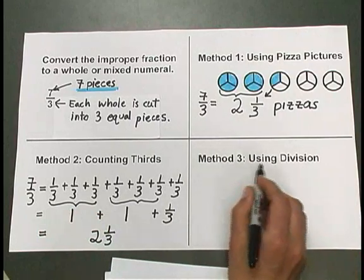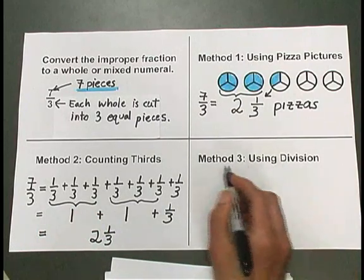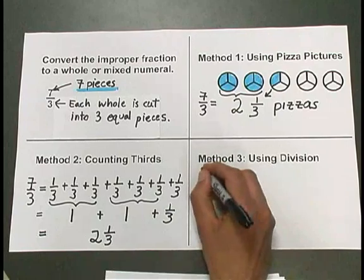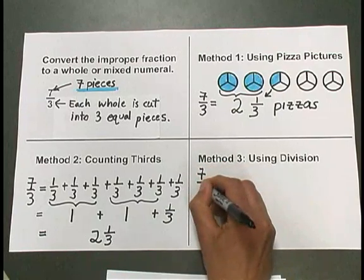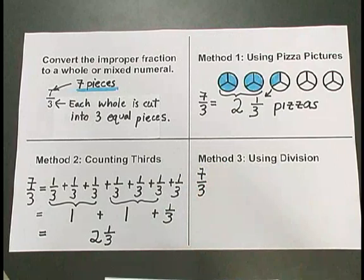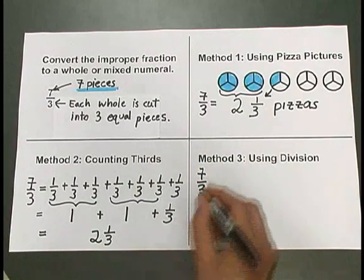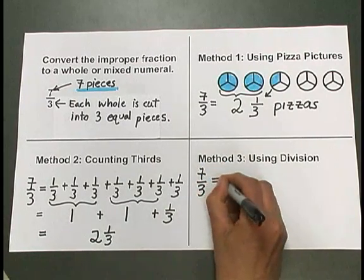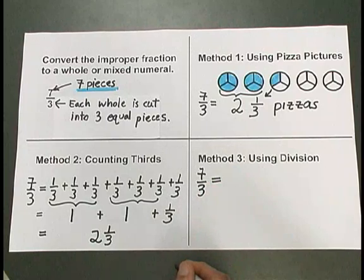Our method 3, using division, is the shortest way, the fastest way, to convert 7 thirds to a mixed numeral. Now, what we're going to do is interpret this fraction as a division problem.